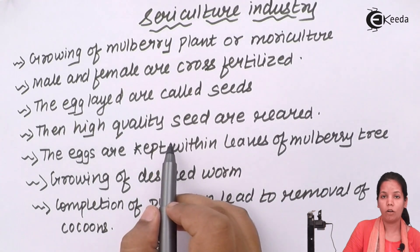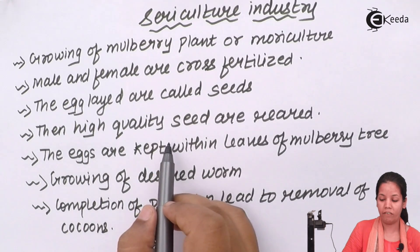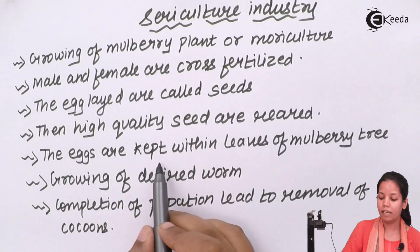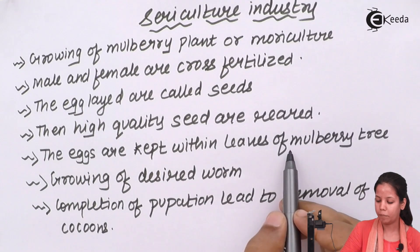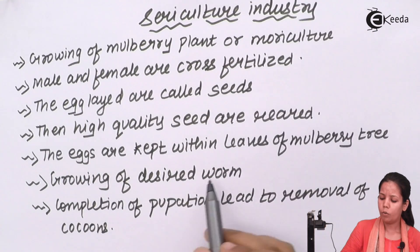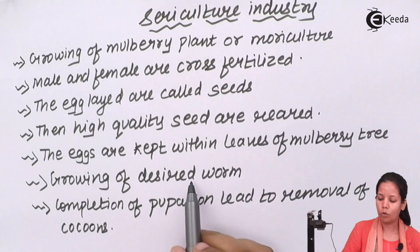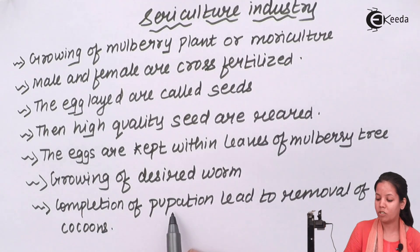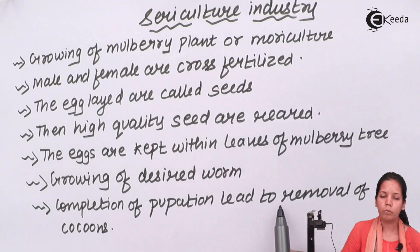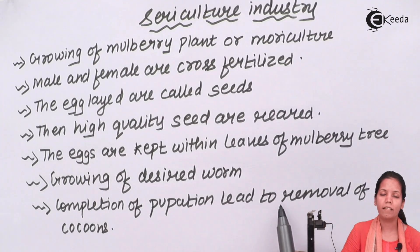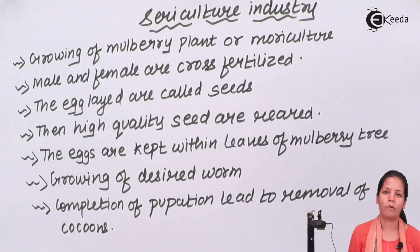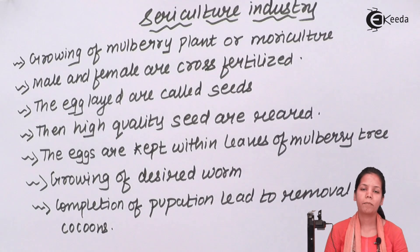These seeds have to be of high quality and they are reared by keeping them within the leaves of the mulberry tree. Once that happens, the desired worms grow, and on completion of the pupation period, cocoons are formed. Finally, the cocoons are removed and silk thread is produced.